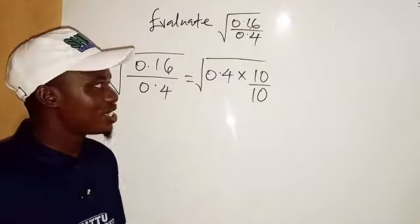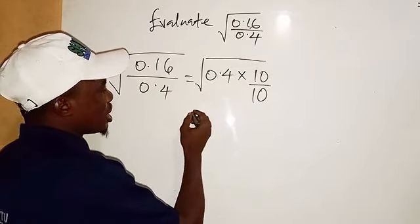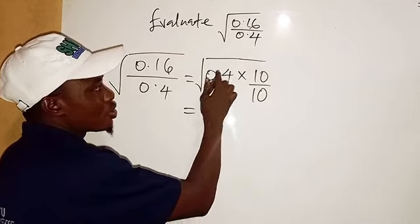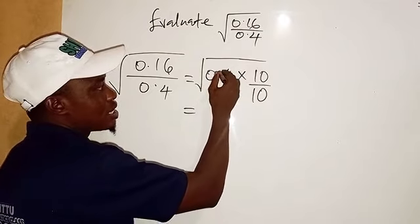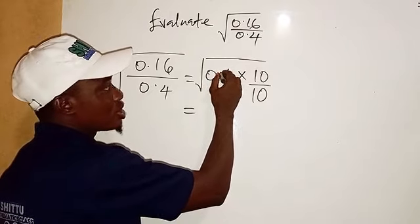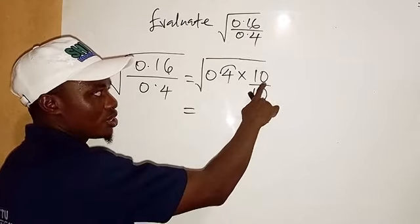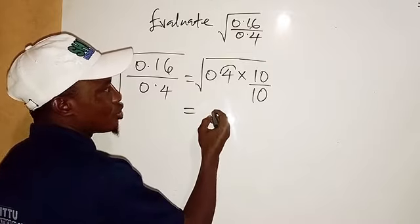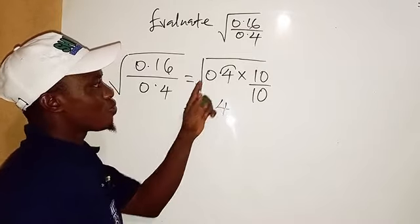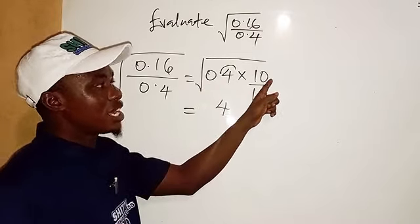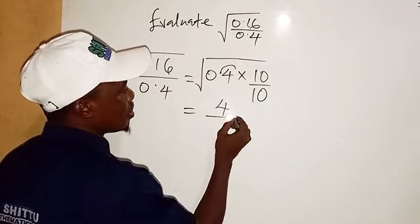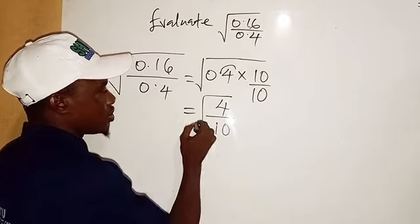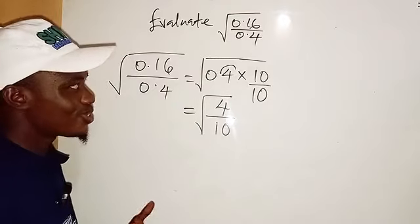From there we can have this to be 10 times 0.4. You are multiplying 10 by this decimal, which shifts the decimal point forward just one time because of this 1 zero here. Therefore, we are going to have 4 when 0.4 is multiplied by 10, then divided by 10, and we have the square root.